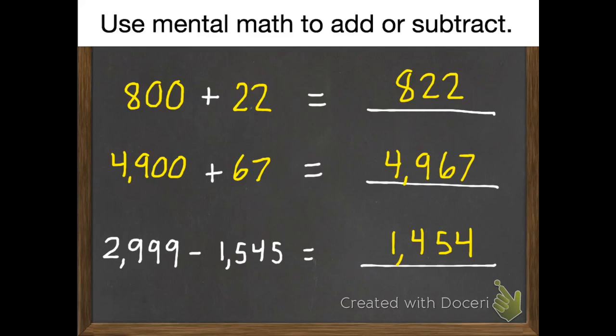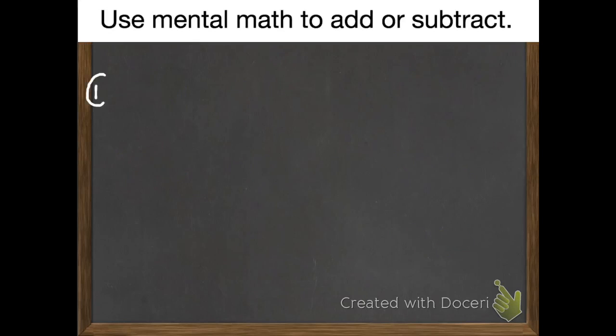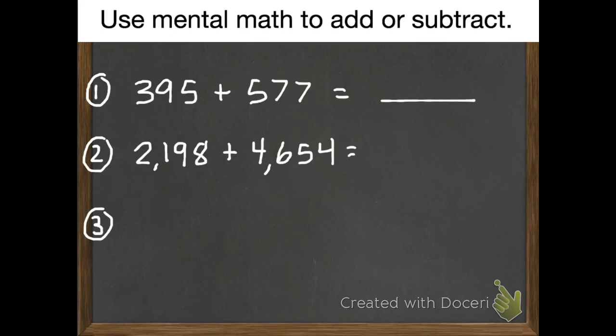Now that you've done the practice problems, here's your last 3 problems you're going to do and come and show me tomorrow. Number 1, 395 plus 577. Number 2, 2,198 plus 4,654. And last problem, 7,999 subtract 2,341.